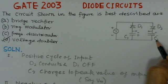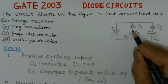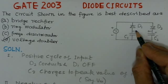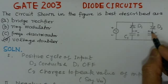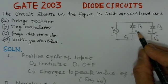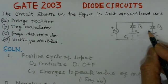We will read out the problem. The circuit shown in the figure is best described as a bridge rectifier, ring modulator, frequency discriminator, or voltage doubler. So we have to identify what type of circuit this is.